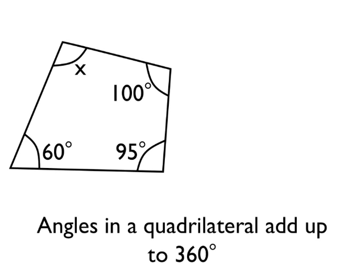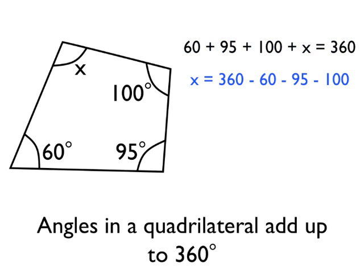Since angles in a quadrilateral add up to 360 degrees, we can say that 60 plus 95 plus 100 plus x equals 360 degrees. Another way to think about it: starting with 360 degrees, we take away 60, take away 95, take away 100, and what we're left with is x. So angle x must be equal to 105 degrees.